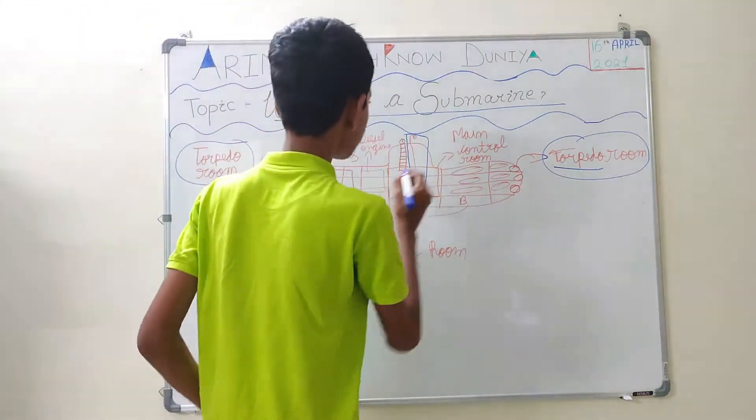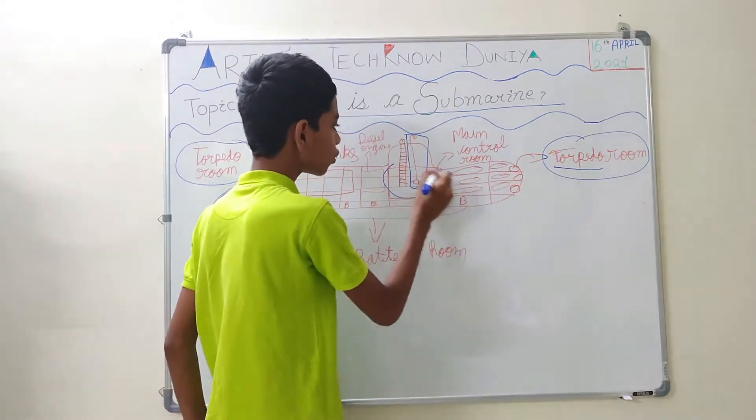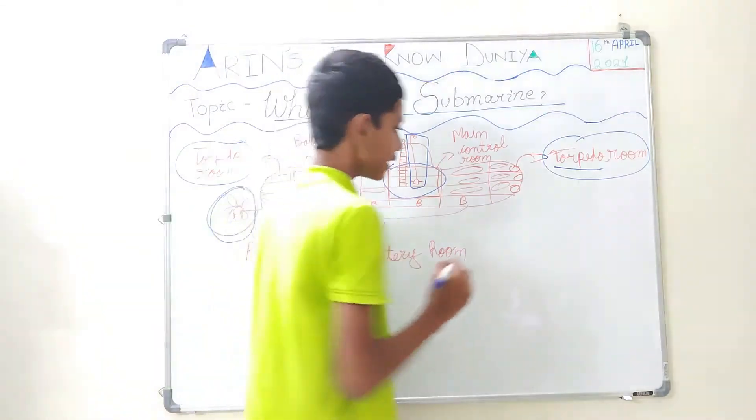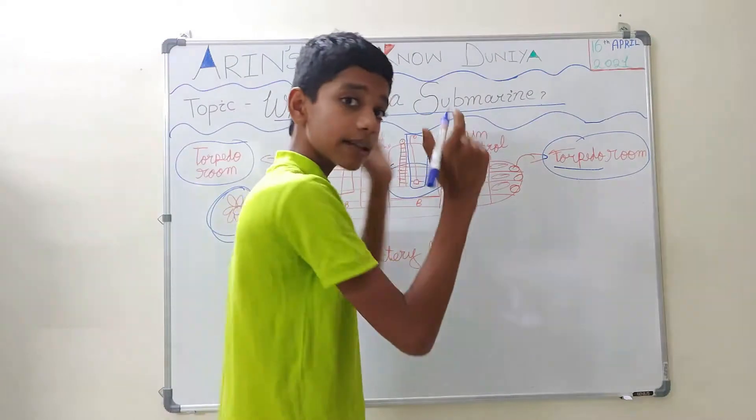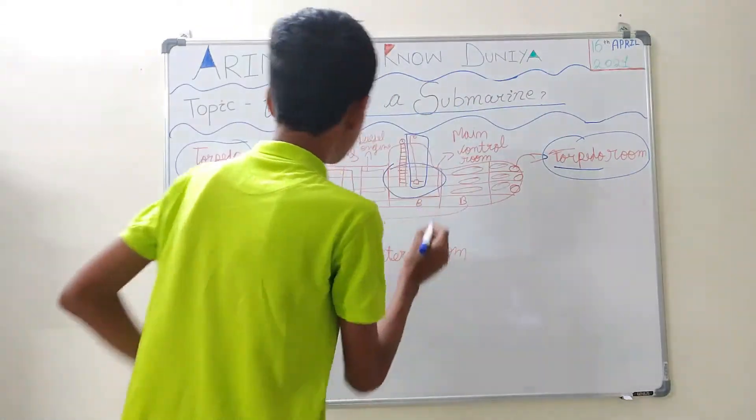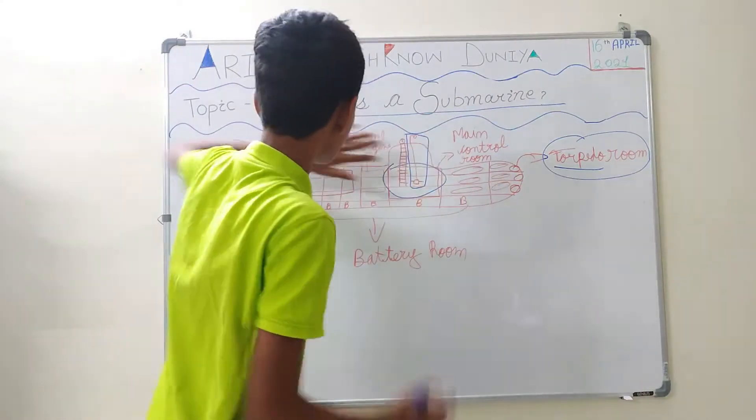The next comes here is the main control room. This is the main room of the submarine. Here, the captain, the motorman, everyone sits here. And there is also a separate planning room. The kitchen is somewhere over here. Everything is here in the main control room.